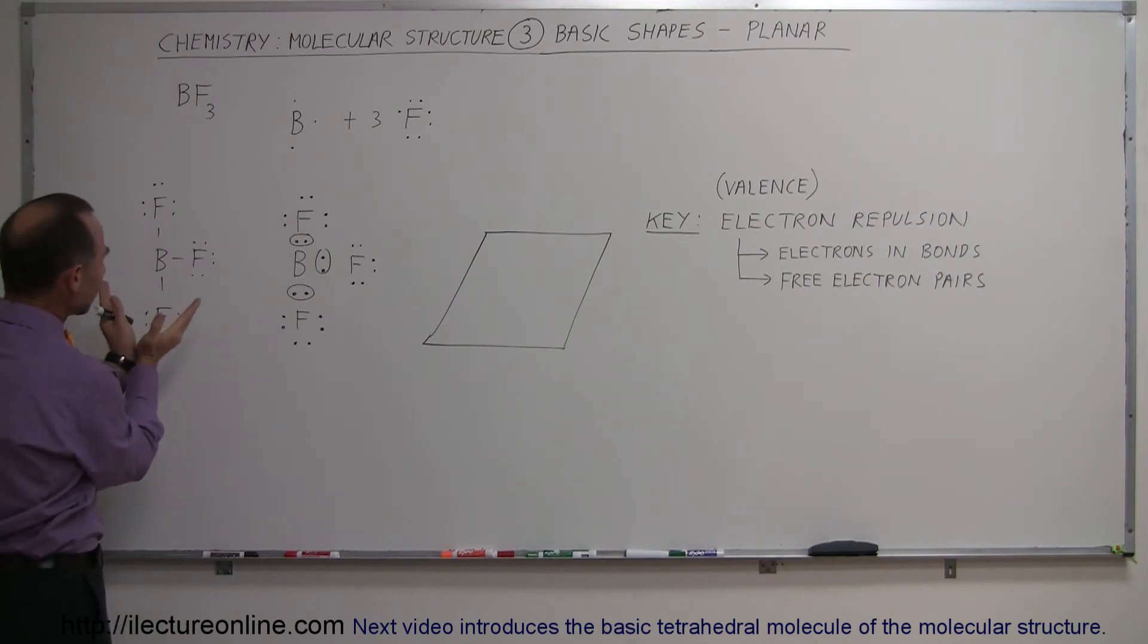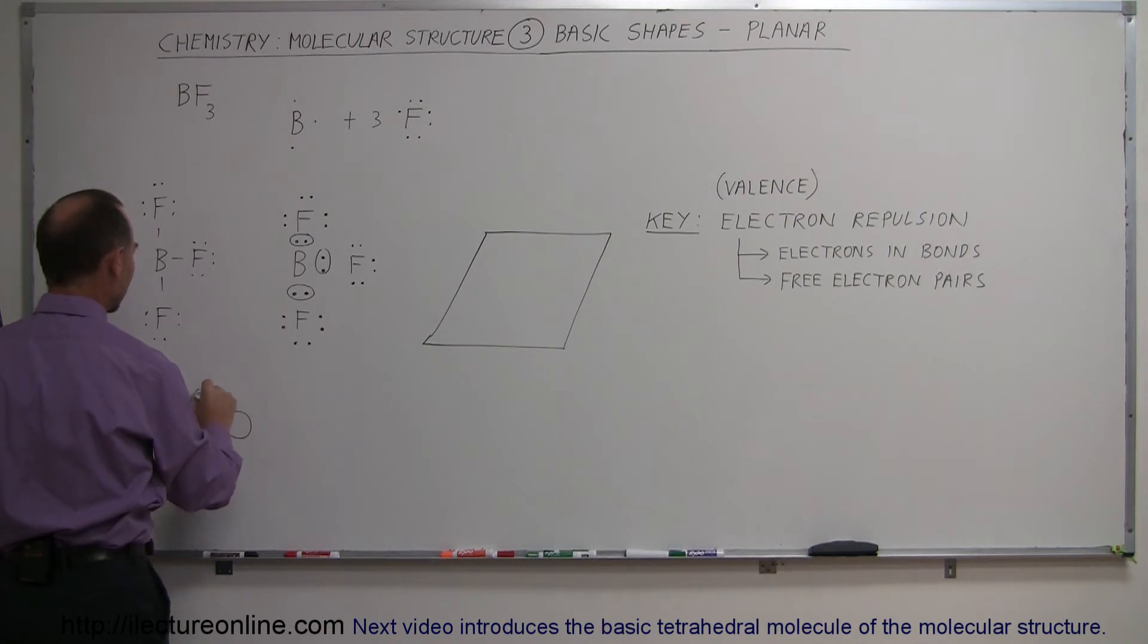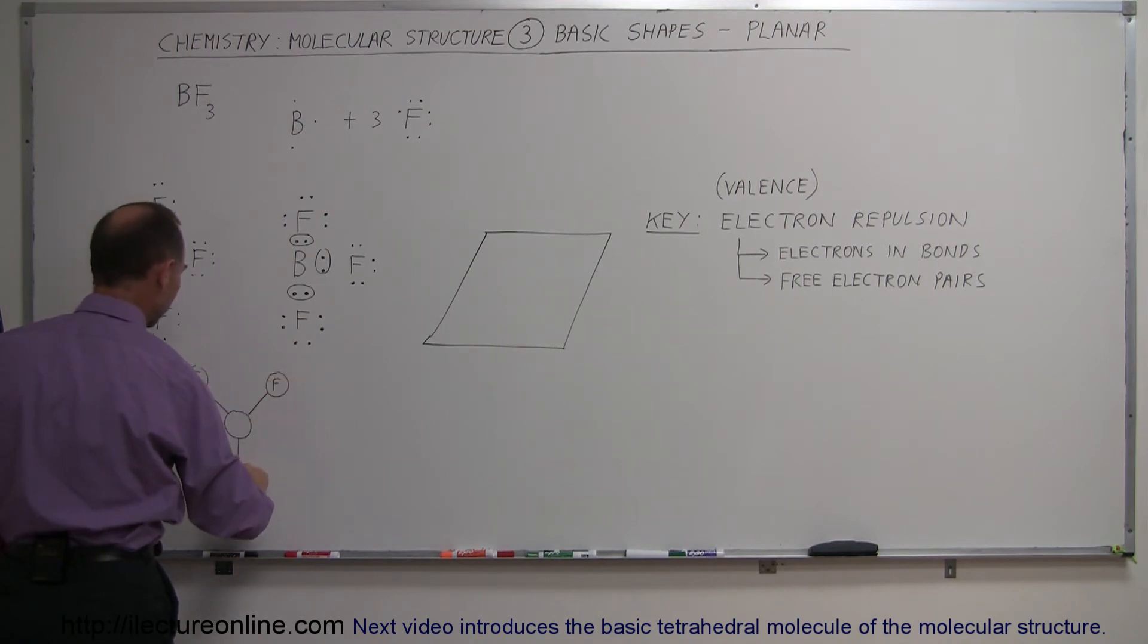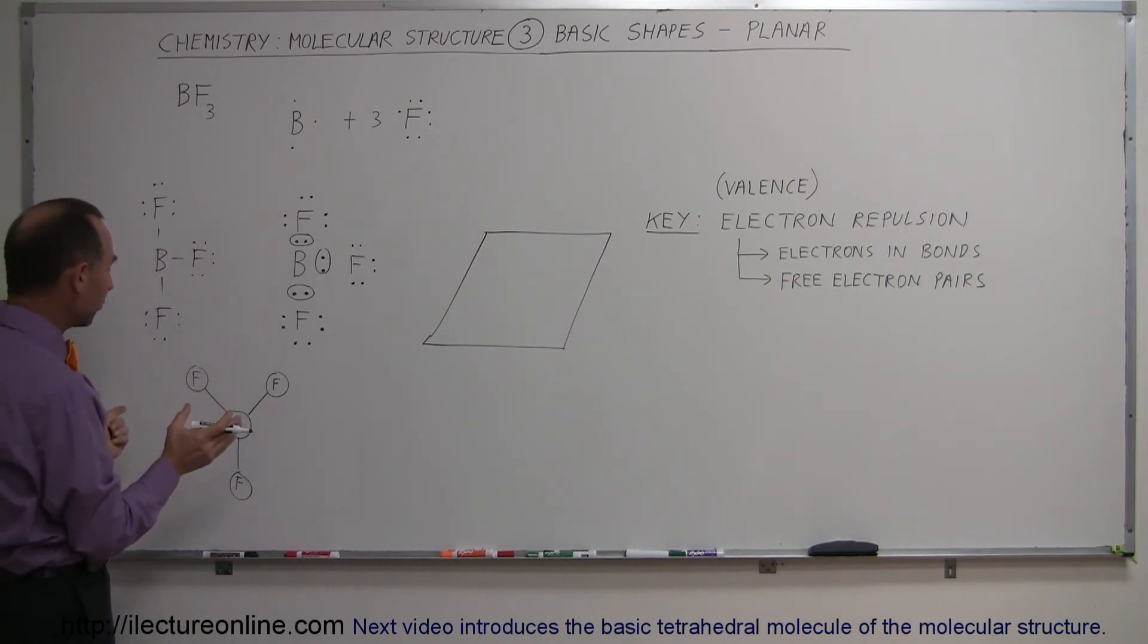They want to bend in the direction so that they're as far away from each other as possible. So you'll end up with a situation where you have your central atom, which is boron, and then the three fluorine atoms bend away from one another in such a way that the angle between the bonds is as large as possible.